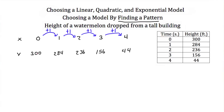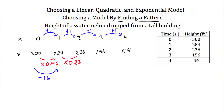The difference between 300 and 284 is either multiplying by 0.95 or subtracting 16. To go from 284 to 236 through multiplication we would be multiplying by 0.83, but that's not the same as 0.95. If this had been an exponential model we would have been multiplying by the same number each time, so we know it's not an exponential model.